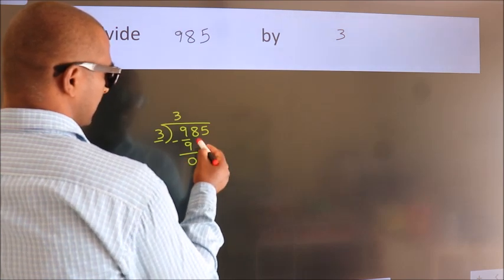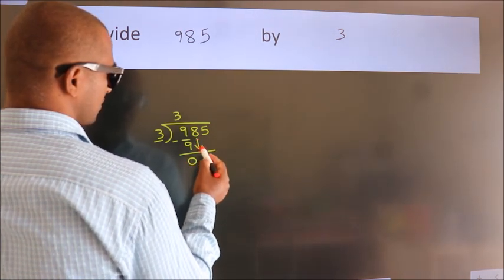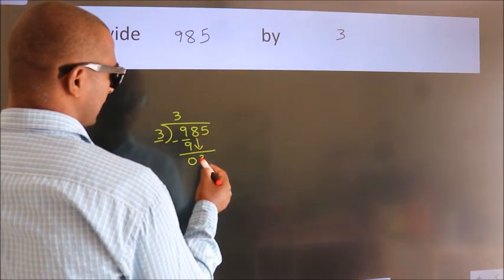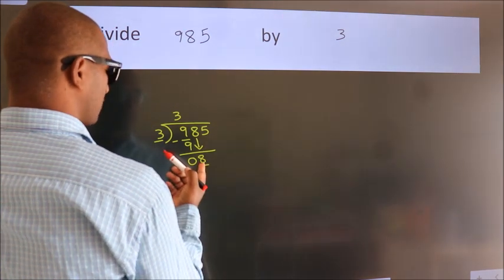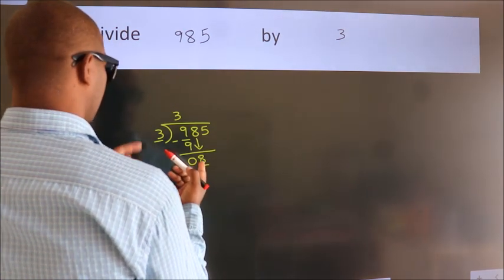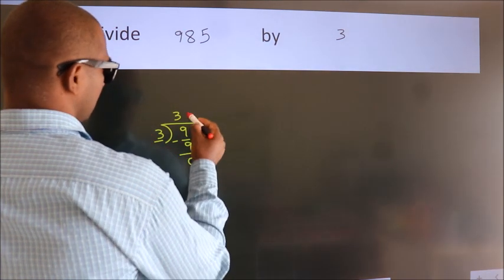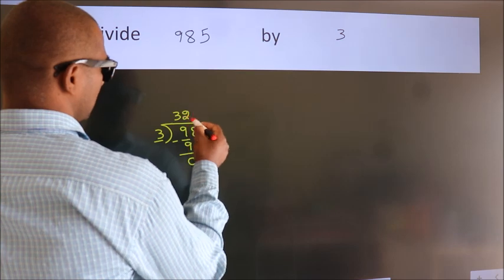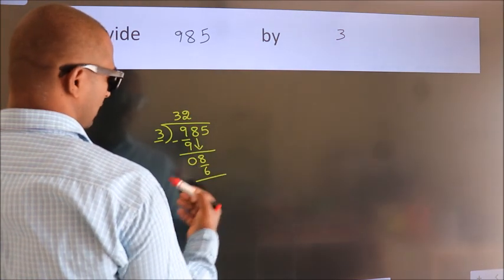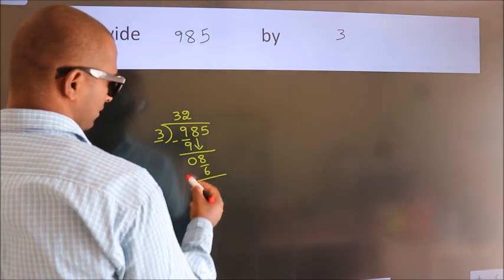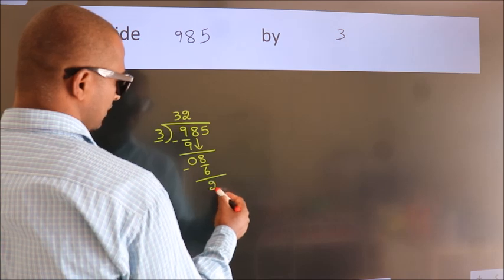After this, bring down the beside number. So 8 comes down, giving us 8. A number close to 8 in the 3 table is 3 twos are 6. Now we subtract. We get 2.